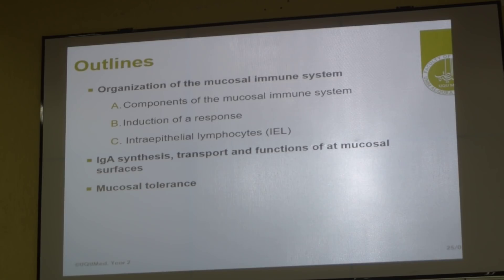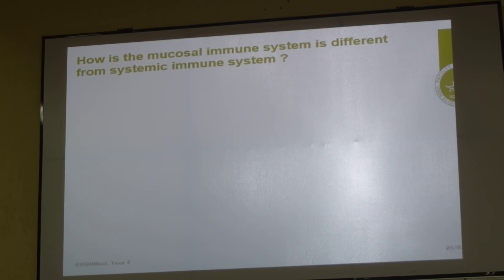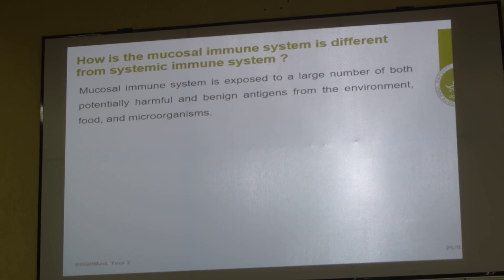And then the mucosal tolerance against the commensals and finally the induction of immune response against the pathogenic bacteria. So first there is a question for you: how is the mucosal immune system different from the systemic immune system? Is there a difference between the two? It is specialized. I have felt in my previous years' experience that students have a slight misunderstanding regarding lymphocytes — where exactly the cells of the adaptive immune system are.